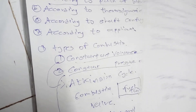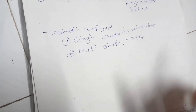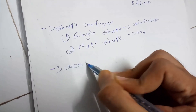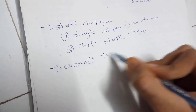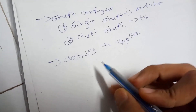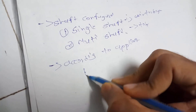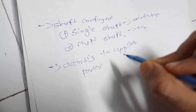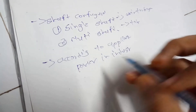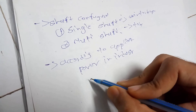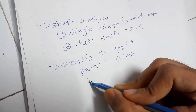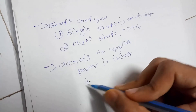The last classification is according to application. Gas turbines are normally used for power generation in industries, and they are also used in aircraft jet engines, where they take in air from the surrounding environment.